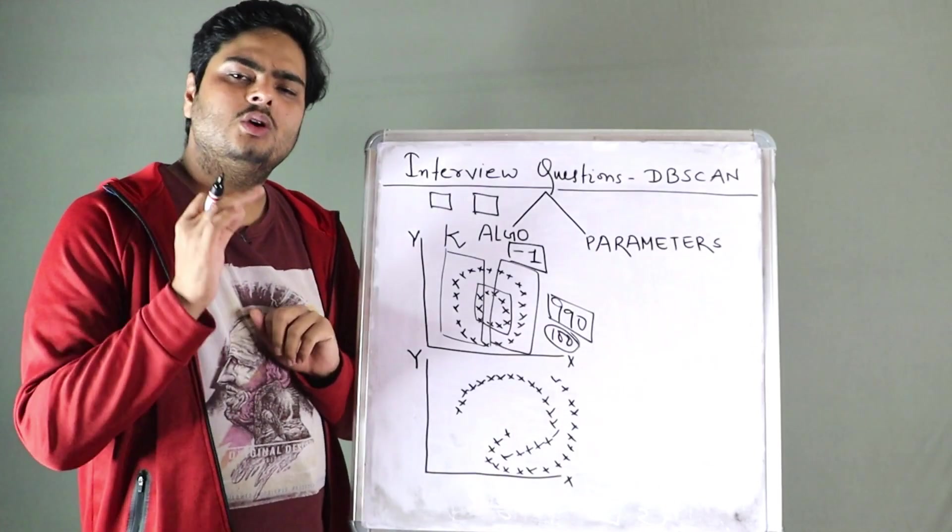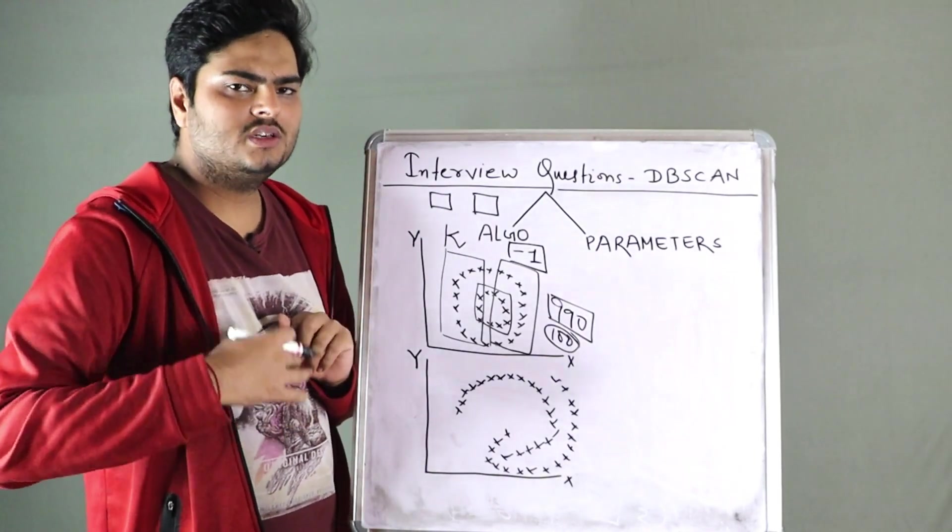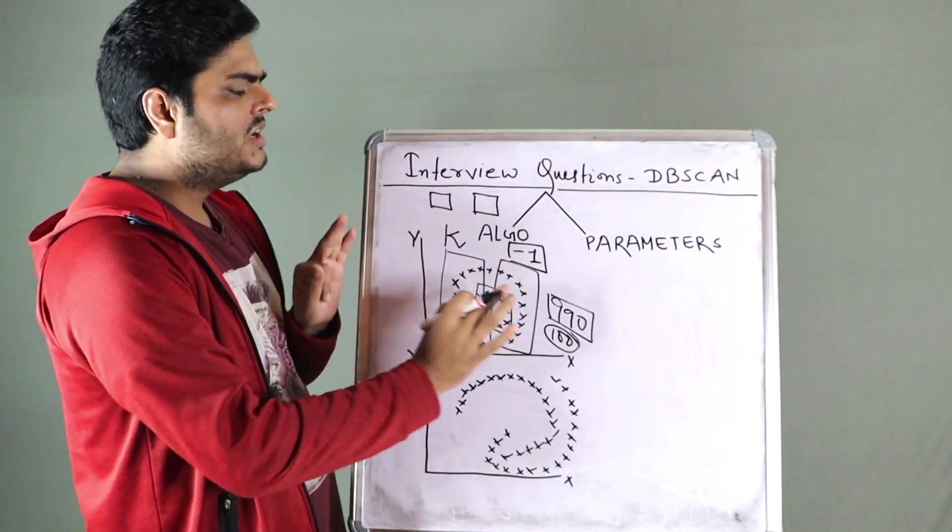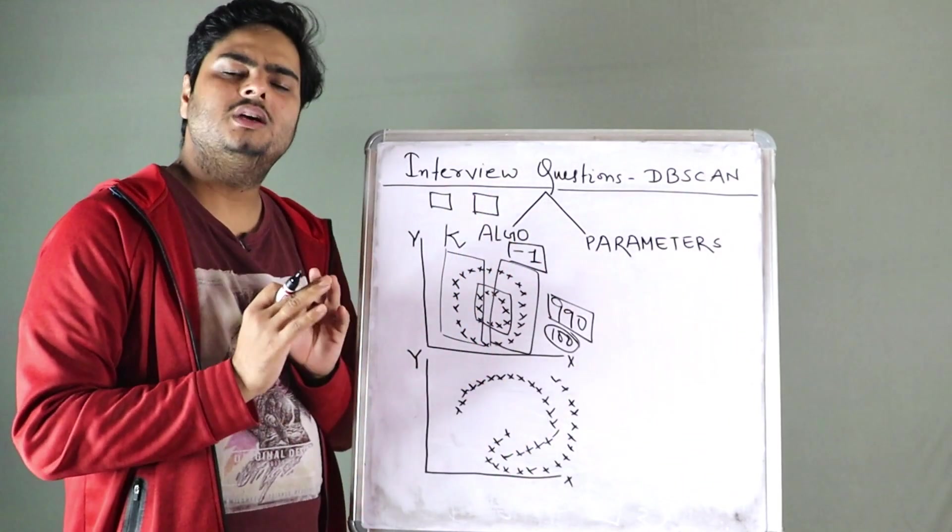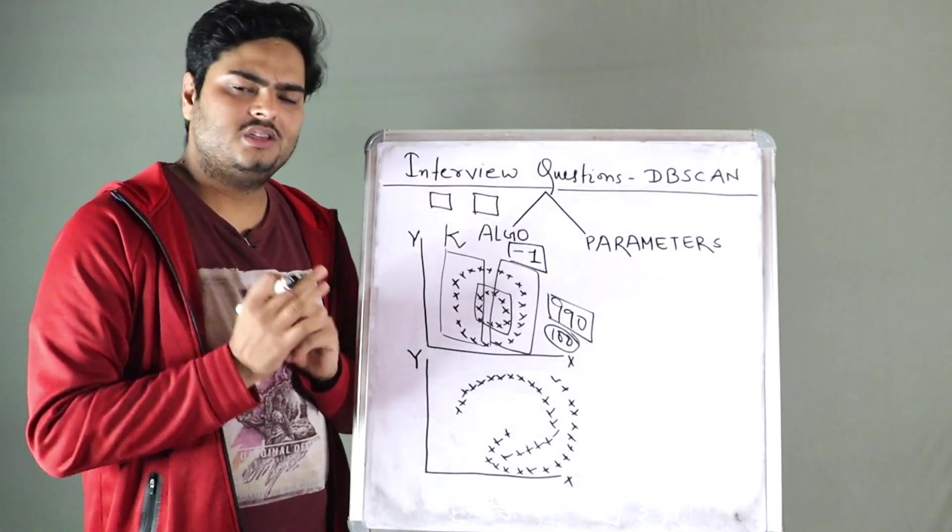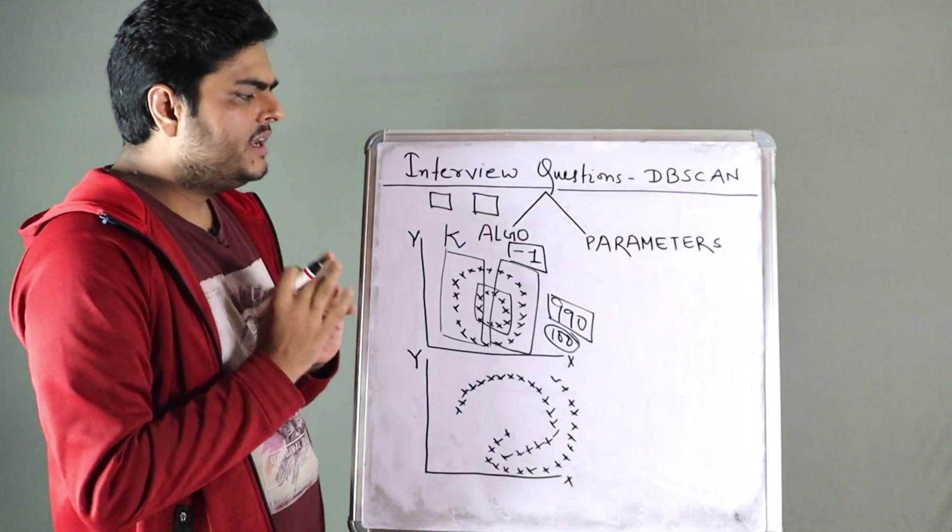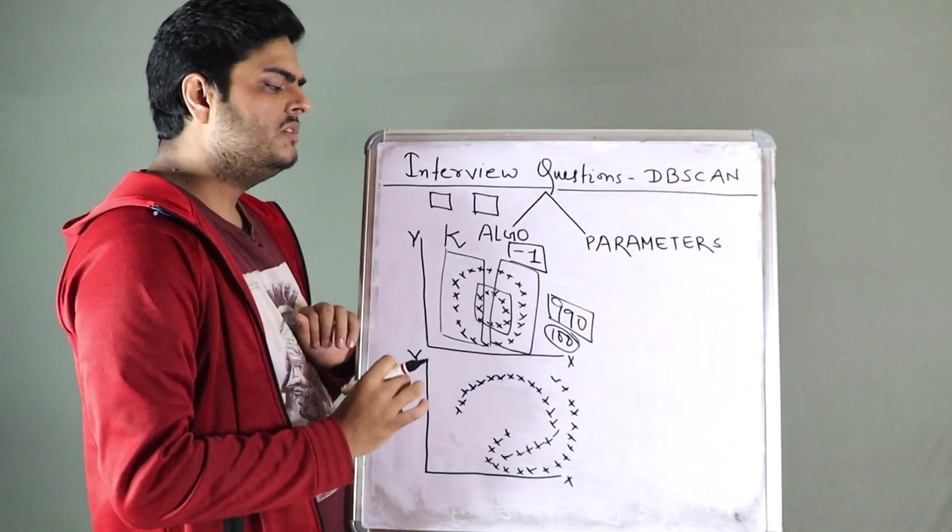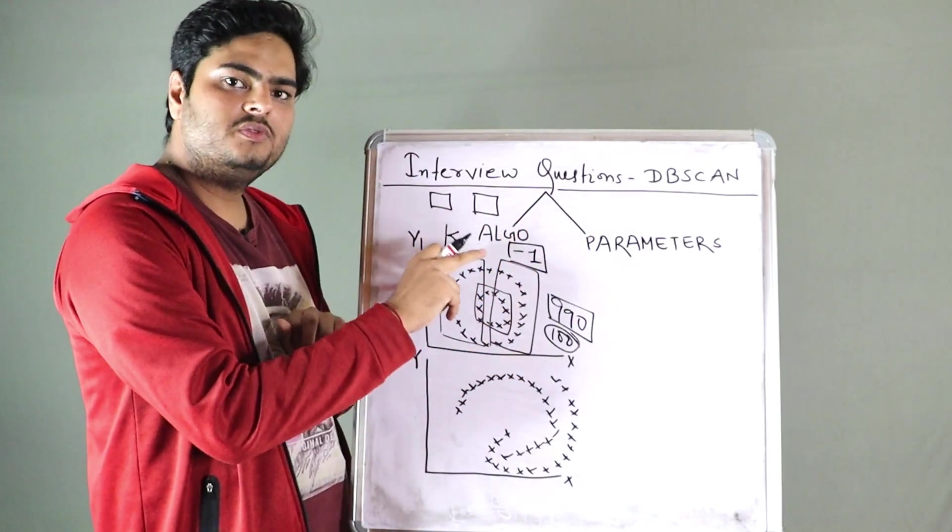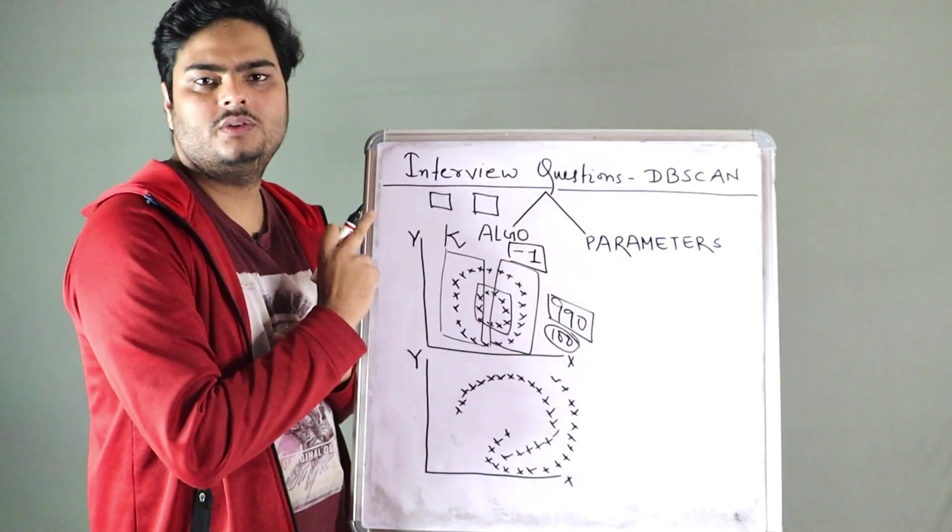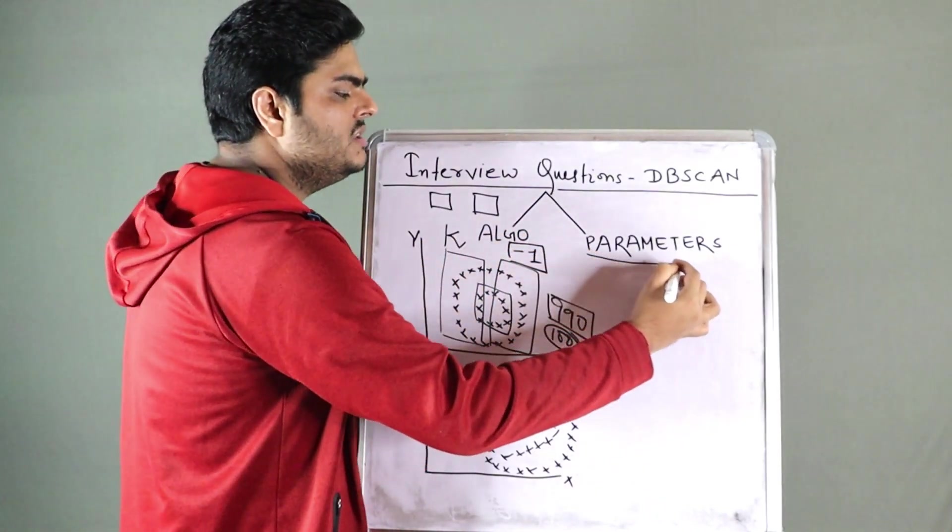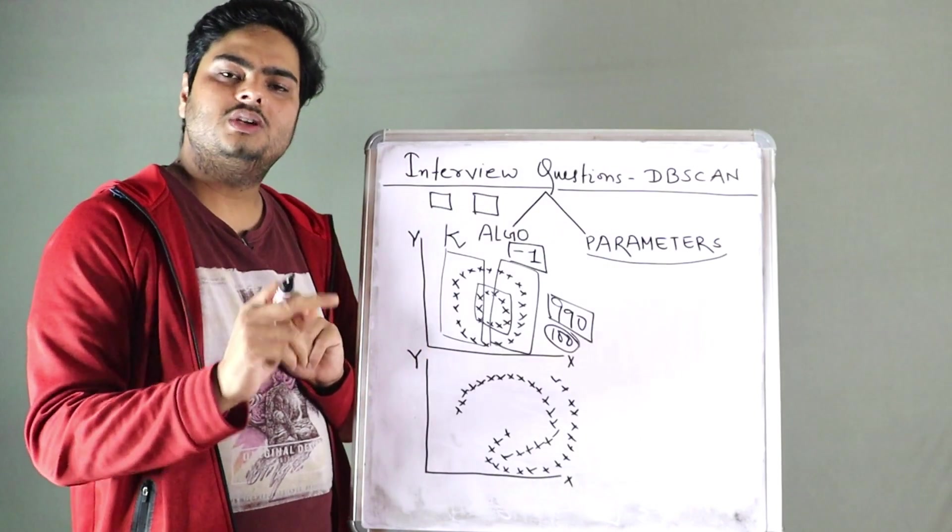And in algo side, people might ask you questions around core point, border point, what is the noise point? These are the mostly on algorithm side. These are the things people might ask you on distance matrices, Euclidean, Manhattan, all these things. Another area which interviewer will touch here is, all these, whatever I spoke in this area, I have explained in my first video of DB scan. You must watch that video if you have not watched.